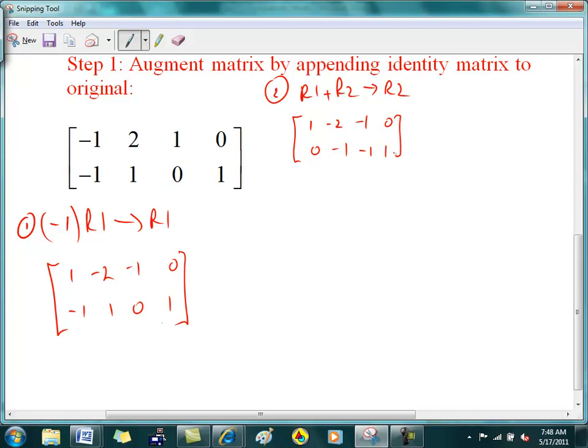I'm going to make this negative two a zero, so I'm going to do negative two times R2 plus R1 into R1. So if I times this by negative two, this leaves unchanged, this becomes a zero, this becomes a one, this becomes a minus two, and the bottom row does not change.